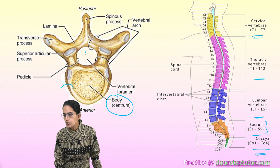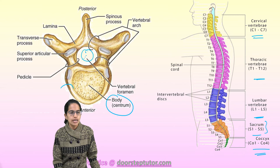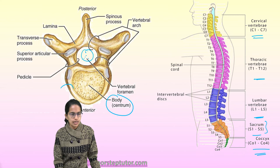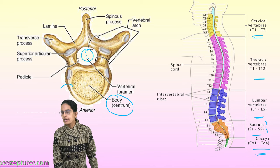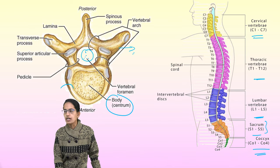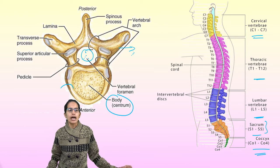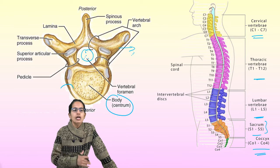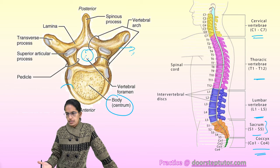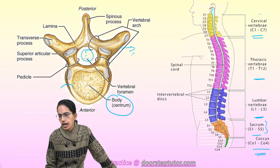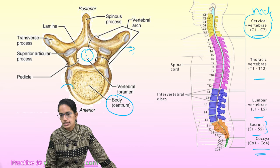There is a bony neural arc which encloses the neural canal inside. Towards the side is the transverse pair of arches known as the vertebral arch. This is the basic structure of the vertebra. The cervical vertebra has seven bones and is located in the neck region.